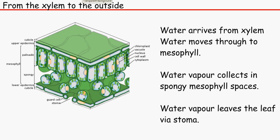So what happens is the water comes up to the xylem because of the transpiration pull, because of the difference in water pressure. And so it enters the leaf cell and it moves through the cells until it gets to the mesophyll cell.